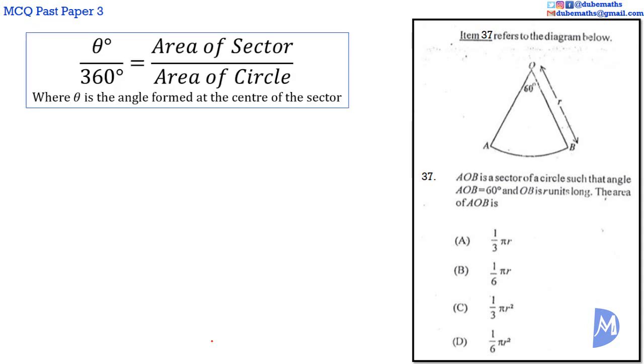Question 37. In a sector, the length of the arc and the area of the sector is proportional to the angle formed at the center. Therefore, the ratio of the angle formed at the center of a sector over the angle in an entire circle, 360 degrees, is equal to the area of the sector over the area of the circle. In this sector, theta is equal to 60 degrees, so we have 60 over 360 is equal to the area of the sector, which we are asked to find, divided by the area of a circle. We know that the area of a circle is equal to pi r squared.